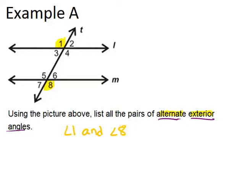The second pair of alternate exterior angles are angle 2 and angle 7. For the same reason, they're on opposite sides of the transversal, and both on the outside of lines L and M. So my second answer is angle 2 and angle 7.